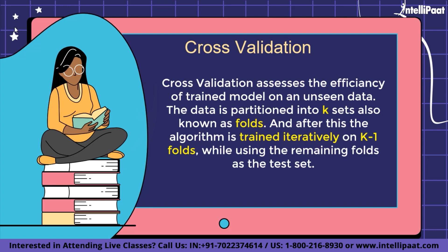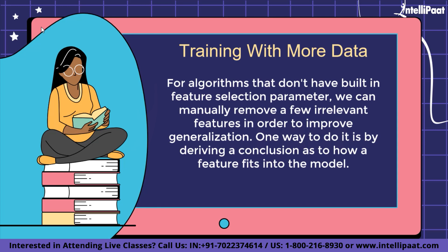The algorithm is then trained iteratively on k-1 folds while using the remaining fold as the test set. In applied machine learning, cross-validation is generally used to assess the skill of a machine learning model on unseen data — to use a small sample to assess how the model will perform in general. It is a popular strategy because it produces a less biased or optimistic assessment of model competence than other methods such as a simple train-test split.